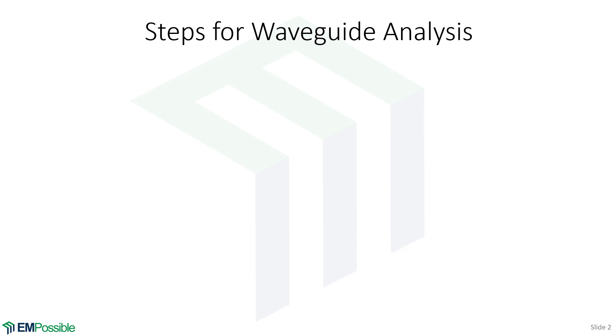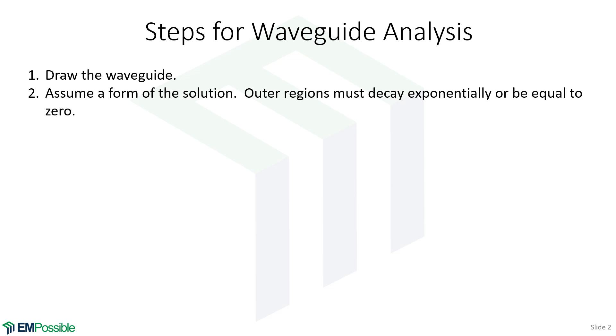Let's first go through the steps for analyzing a waveguide. The very first one, draw the waveguide, label the dimensions, the material properties, that sort of thing, understand everything about the waveguide that Maxwell's equations would need to know in order to understand the modes in the waveguide. The next thing we'll do is assume the form of a solution.